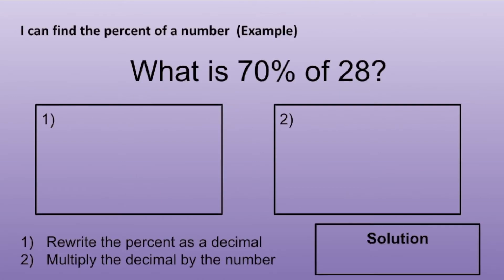The first problem reads, what is 70% of 28? In order to find the percent of a number, there are two steps. Step 1 is to rewrite the percent as a decimal. And Step 2 is to multiply the decimal by the number.